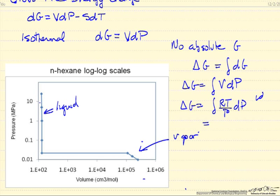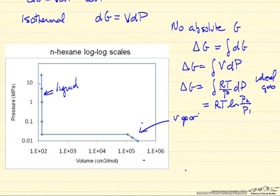So this is important that it's ideal gas, RT over constant, log of the final pressure over the initial pressure. So an important thing to notice here, when we go through a phase change, we have a large volume change.